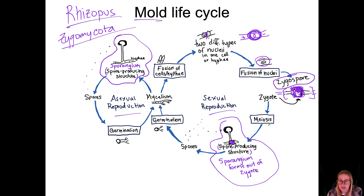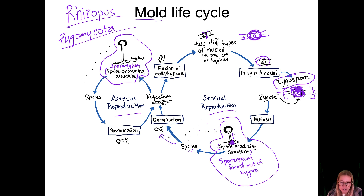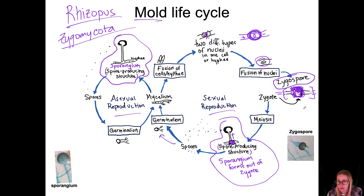The zygote goes through meiosis, and then a sporangium pops straight up out of it. The spores are released when it's time, they land somewhere, and when conditions are suitable they germinate. You will see a zygospore in lab as well.